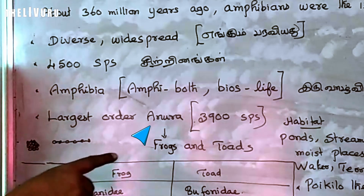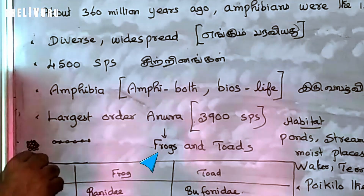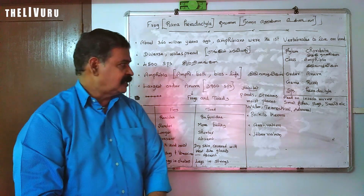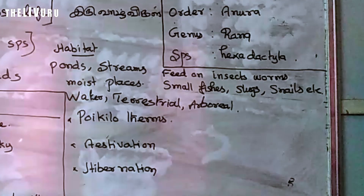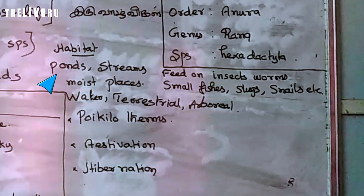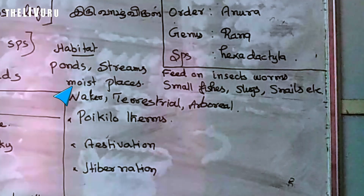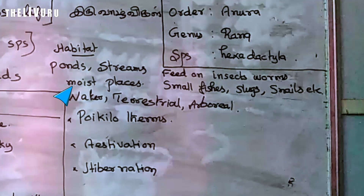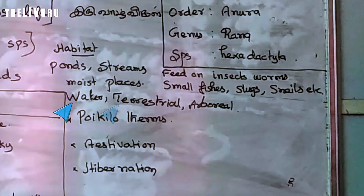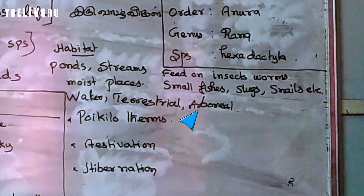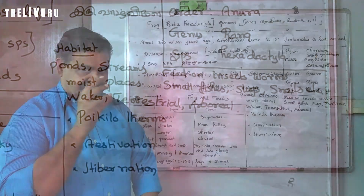Anura's order includes frogs and toads. Habitat includes ponds, streams, moist places, terrestrial land, and even arboreal — arboreal means living on trees.